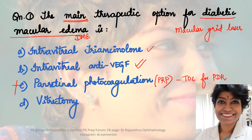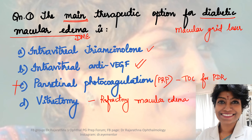What about vitrectomy? Vitrectomy is an option, but only if you have refractory macular edema not responding to any modality of treatment. Only then do we resort to doing a pars plana vitrectomy, because it takes care of the vitreomacular traction component. Sometimes there can be vitreomacular traction or an epiretinal membrane causing macular dysfunction and resulting in macular edema. In those cases, yes - vitrectomy. But we're talking about the main therapeutic option, which is definitely not vitrectomy.